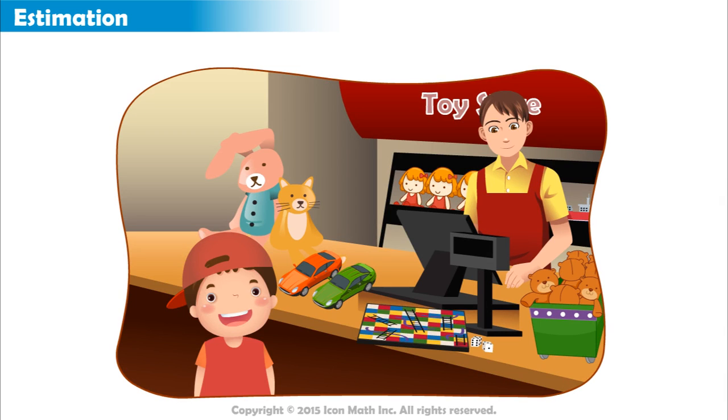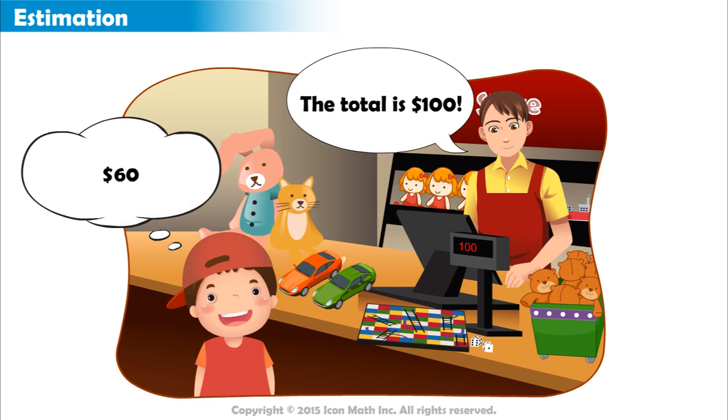Now, Cody brings the toys to the cashier, expecting to pay about $60. But the cashier says the total is $100. Cody is sure of his estimation, so he recognizes that the cashier must have made a mistake.